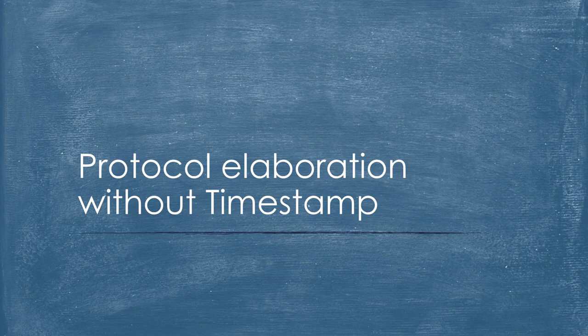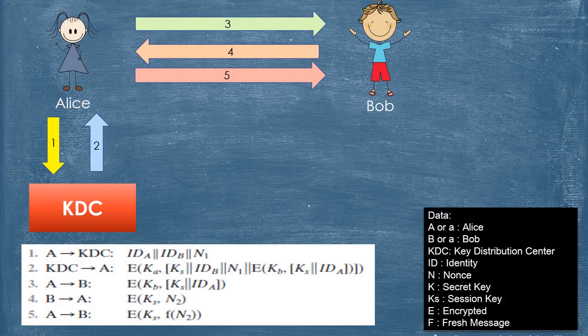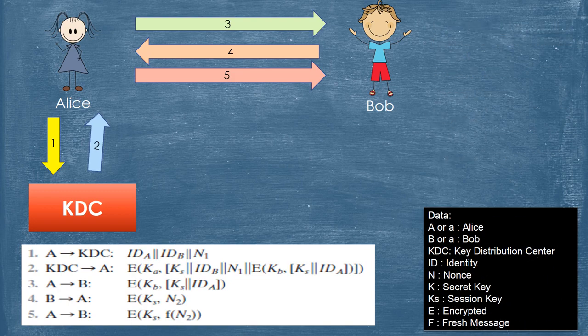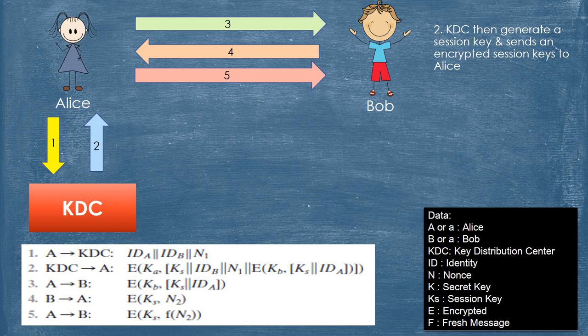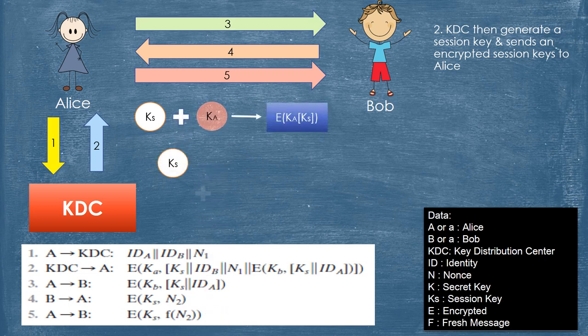Explanation of Needham and Schroeder Using KDC Without Timestamp. Step 1: Alice sends her identity and Bob's identity with her nonce to the KDC. Step 2: The KDC then generates a Session Key and sends encrypted Session Keys to Alice. For encryption of the Session Key, the KDC generates the Session Key and then encrypts it with Alice's Secret Key.